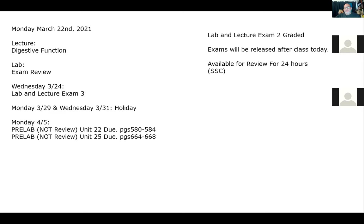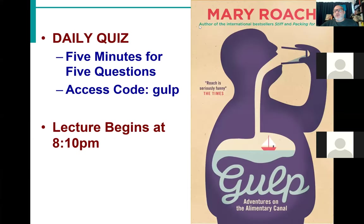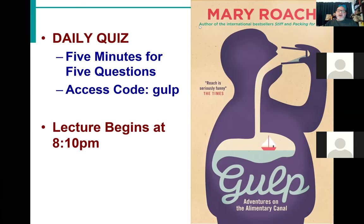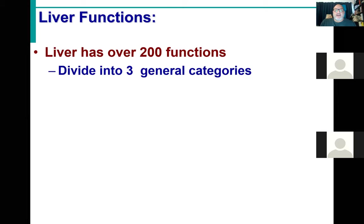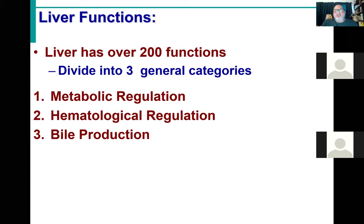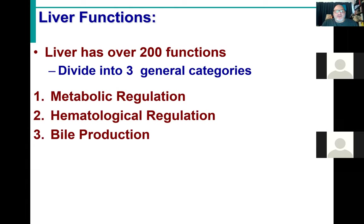Returning to lecture: last time we worked through the alimentary canal into the small intestine and discussed accessory structures — the pancreas, gallbladder, and liver anatomy. The remaining topic is liver functions. The liver is the largest visceral organ in the body with over 200 functions. These are divided into three general categories: metabolic regulation, hematological regulation, and bile production.